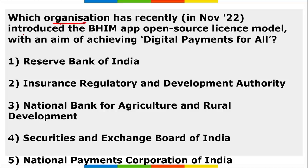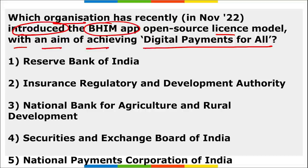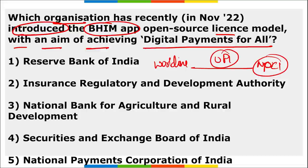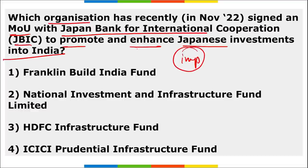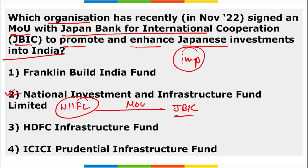Which organization recently introduced the BMAP open-source license model to achieve digital payment for all? It was launched by the National Payments Corporation of India (NPCI). Also, NPCI signed an MOU with Worldline to increase UPI usage in Europe. The National Investment and Infrastructure Fund Limited (NIIFL) signed an MOU with JBIC — Japan Bank for International Cooperation — to enhance Japanese investment into India.